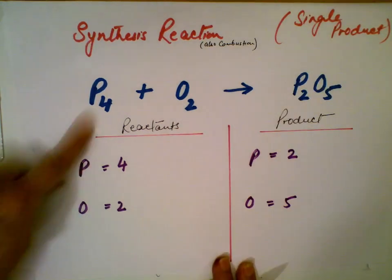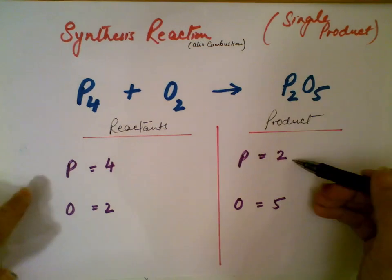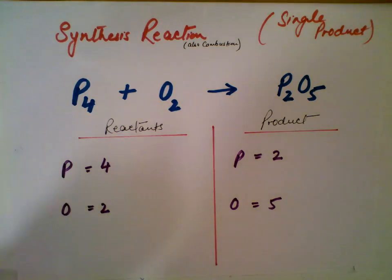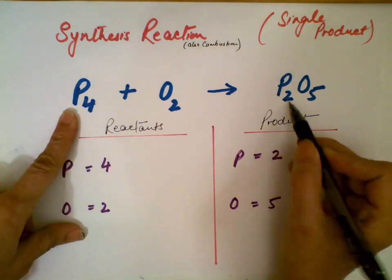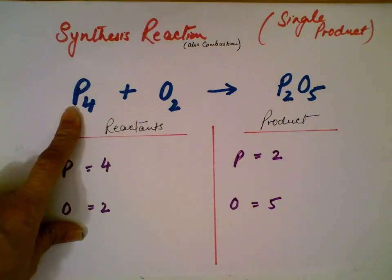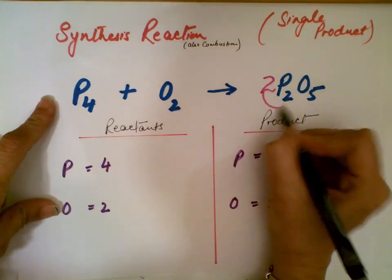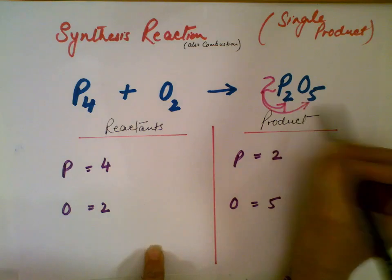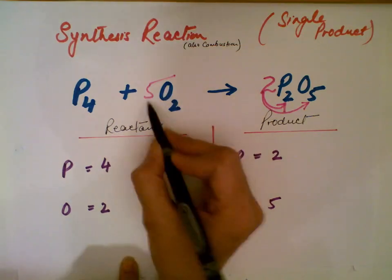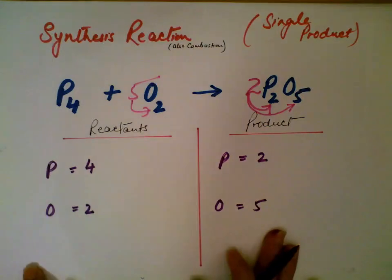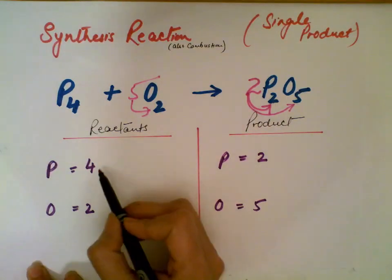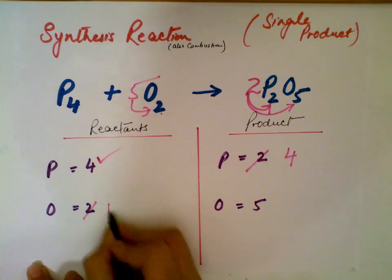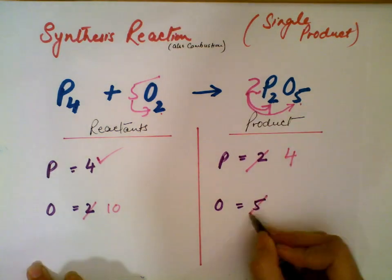Another example. You have 4 atoms of phosphorus on the left and 2 atoms of phosphorus on the right side. You have 2 atoms of oxygen on the left and 5 atoms of oxygen on the right — they're not balanced. Here you have 4 phosphorus but only 2 on the right, so put a coefficient of 2: 2 times 2 is 4. When you put 2 there, oxygen becomes 2 times 5 equals 10. To make the left-side oxygen 10, put a coefficient of 5: 5 times 2 is 10. Now both sides are balanced: 4 phosphorus, 4 phosphorus; 10 oxygen, 10 oxygen.